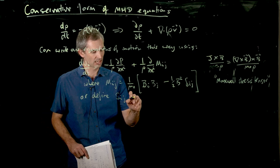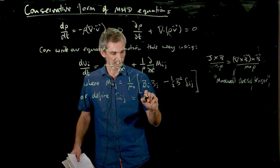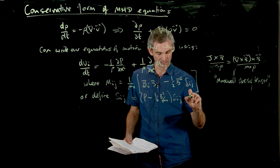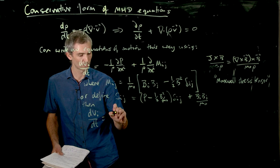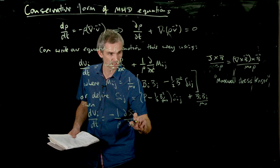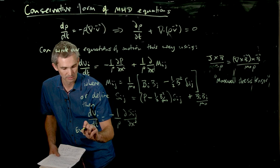Or if we simply define some new tensor, SIJ equals, well, you can define it any way you like. But if we define it as p minus a half b squared on mu naught, delta i j plus b i b j on mu naught, then we can simply write this whole thing like a stress tensor. So it's like a divergence, one is one on rho, divergence of this stress tensor, dx j.